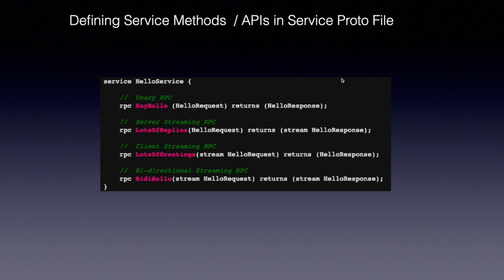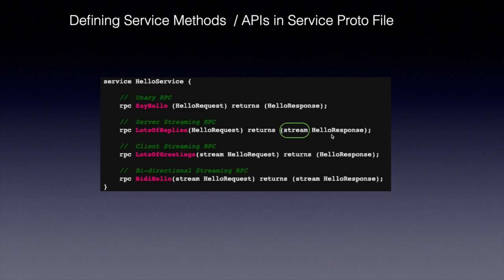You are seeing a small code snippet here. I have defined a service called HelloService with the four kinds of methods. The first is a unary RPC — it has a method SayHello, passing a single HelloRequest and returning a single HelloResponse. The second is a server streaming RPC — the LotsOfReplies method takes a single HelloRequest and returns a stream of HelloResponse messages. That is how server streaming works: the client sends a single request and gets a stream of messages back.